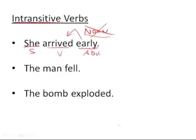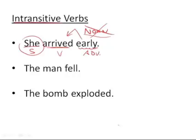Hence we simply have 'she arrived early.' We could even have just 'she arrived,' which interestingly enough is basically as simple as a sentence can get. A subject alone, such as 'she,' is not a sentence. 'Arrived' alone is not a sentence. But if you have 'she arrived,' you have this intransitive verb — it doesn't need anything else. You have a sentence. You have a subject and a verb.